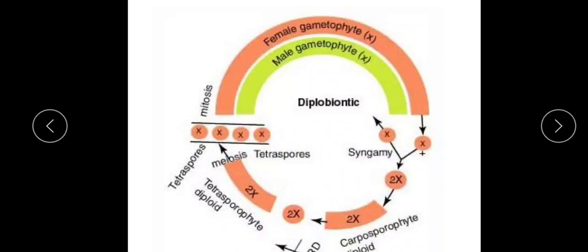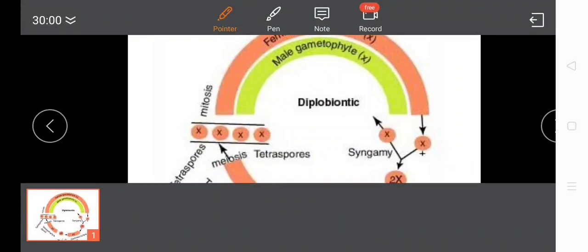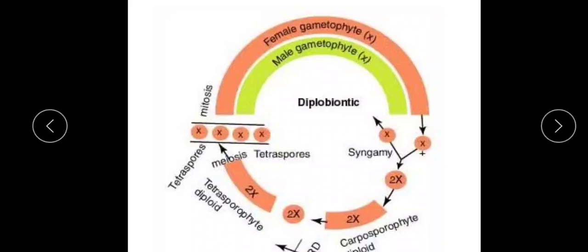To summarize this life cycle: the diplobiontic life cycle gets its name because it has two successive diploid generations. The haploid phase is followed by two successive diploid generations — the carposporophyte and the tetrasporophyte. So there are two diploid generations in this cycle.